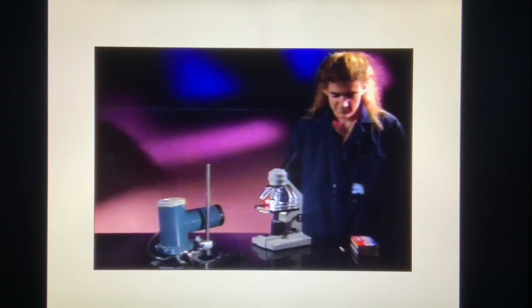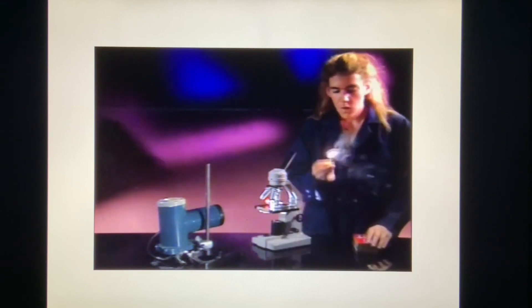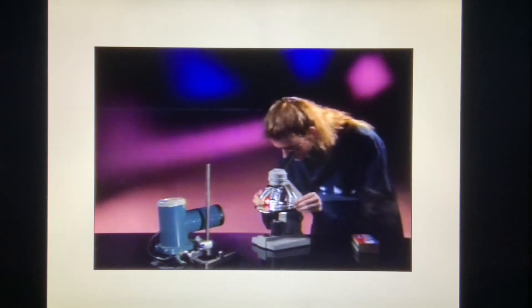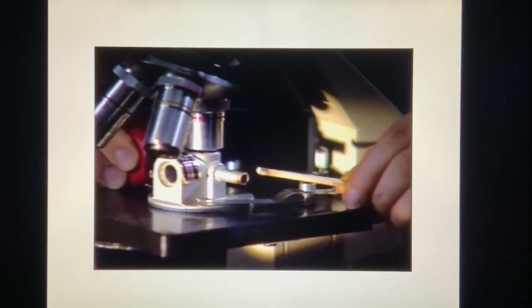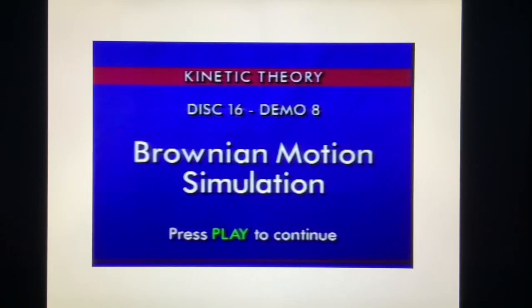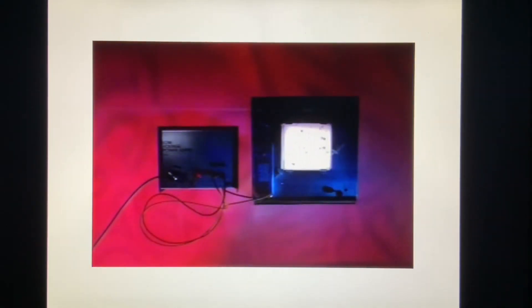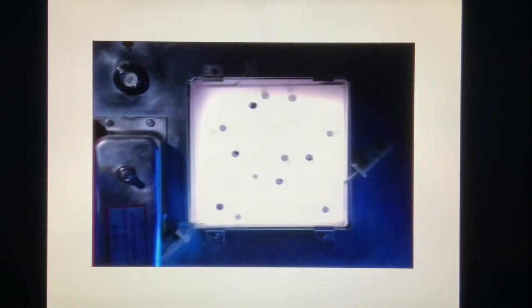Brownian motion provides direct evidence of the existence of atoms and molecules, using nothing more complicated than an ordinary microscope. We'll fill this small chamber with smoke particles from a match, then watch the particles under a magnification of 100 times. Notice the random jiggling motion of the smoke particles, caused by air molecules colliding with the much larger particles of smoke.